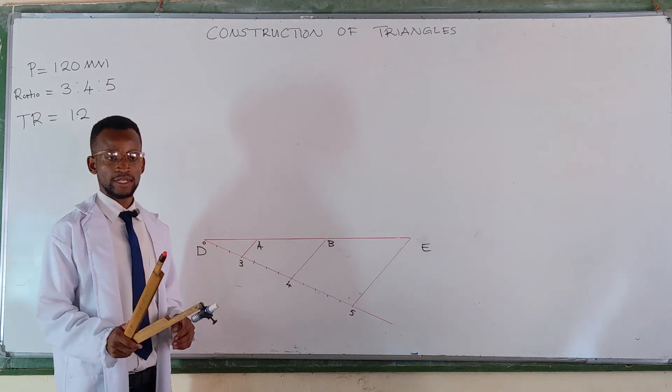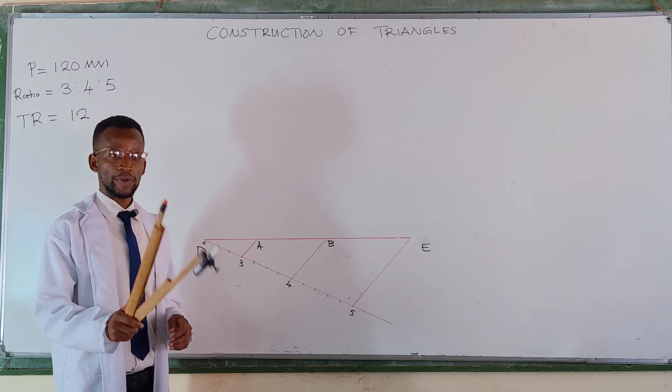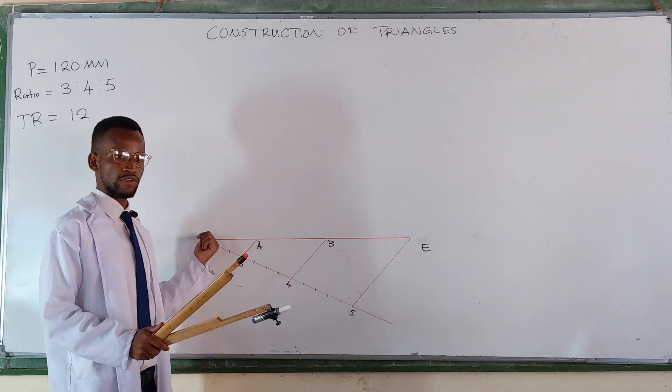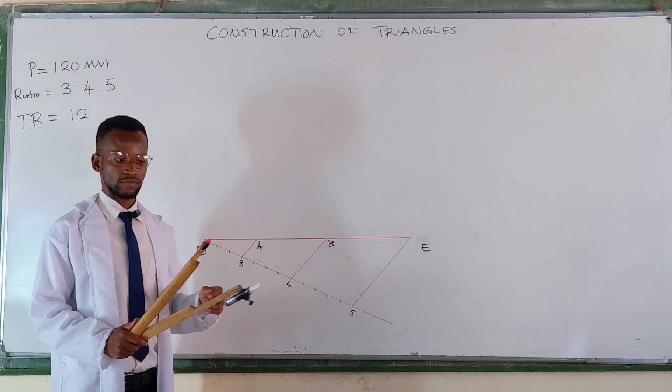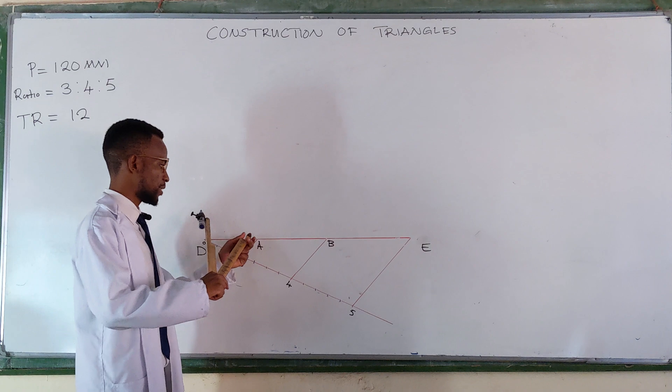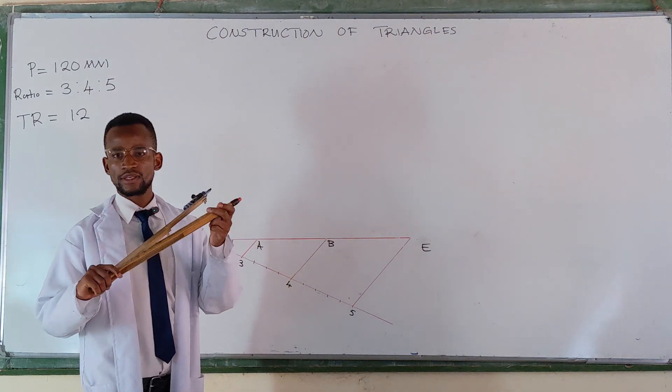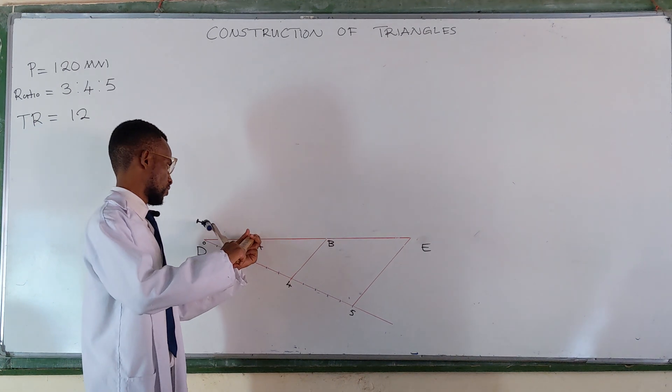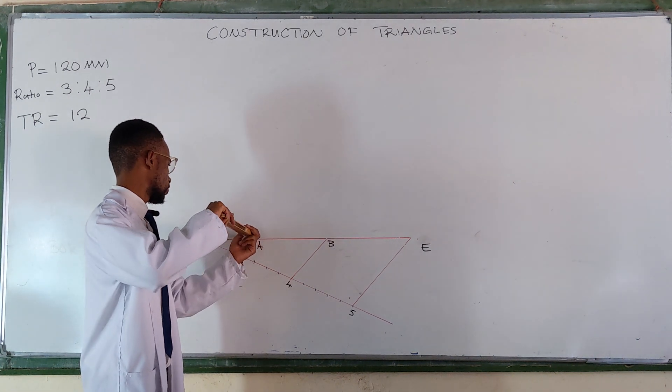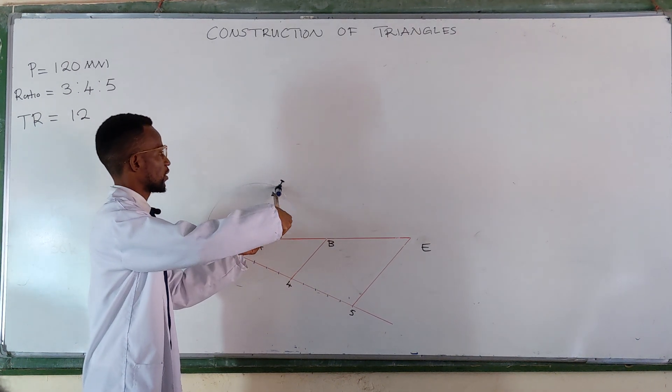You get your compass, place it at point A, open it to D. Listen, point D here. Get your compass, place it at point A, open it to D, meaning you get the distance A, D. So from point A, you strike an arc like this one.